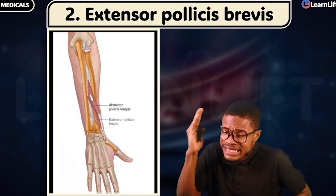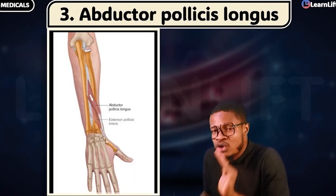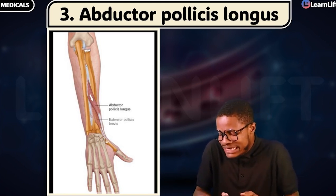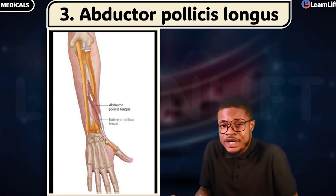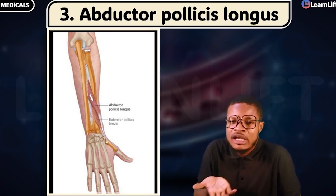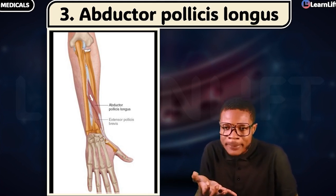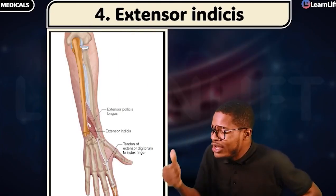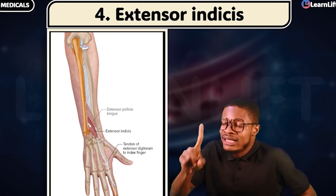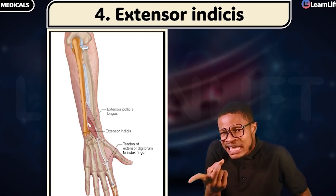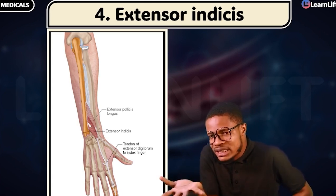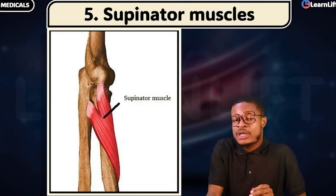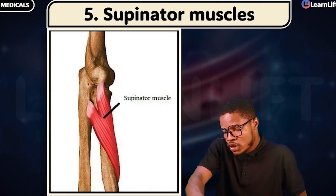The third is abductor pollicis longus — from the name, abductor means it moves the thumb away from the midline of the body, and longus means it is a long muscle. Number four is extensor indicis — it helps in the extension of the index finger. Number five, the last, is the supinator muscle — it helps with supination, not pronation.